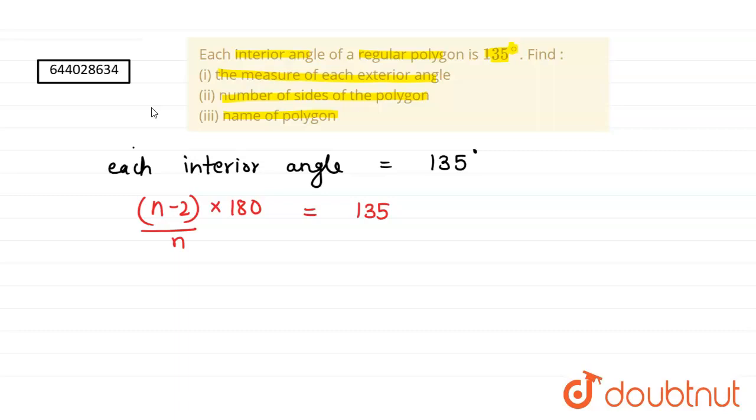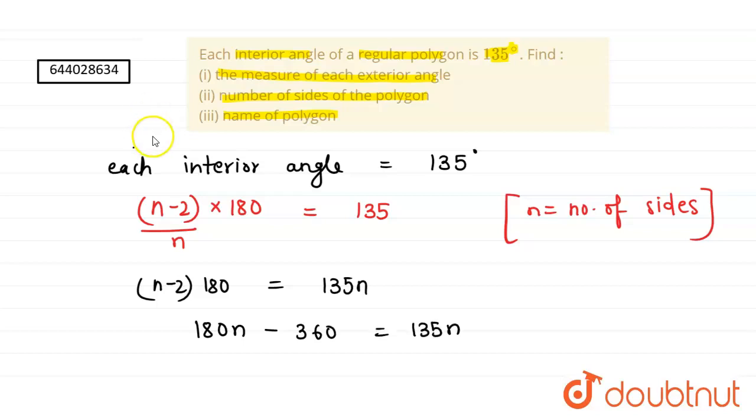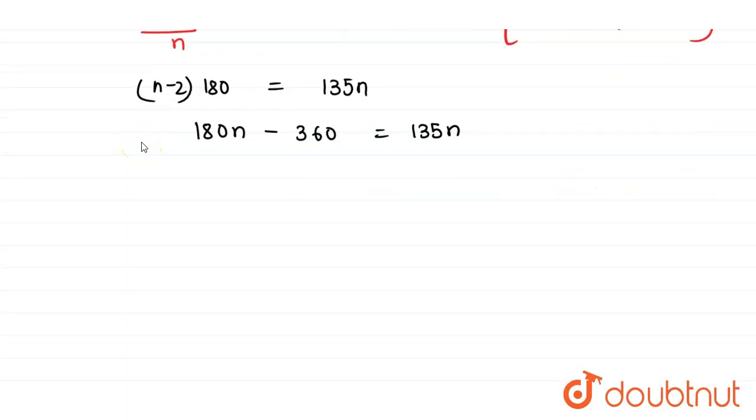So now we will solve this equation for finding the value of n. Cross multiplying here we will get (n-2) × 180 = 135n. So multiplying 180, we get 180n - 360 = 135n. Now this can be written as 45n = 360.